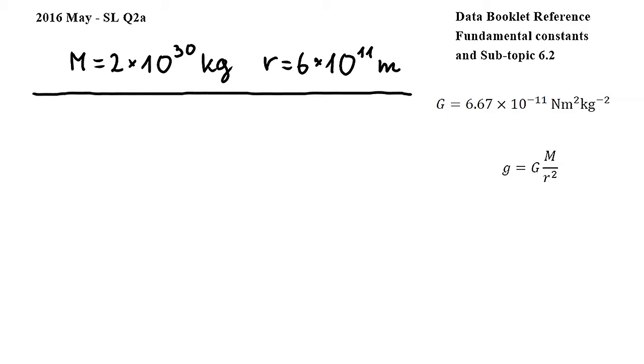In this question, we have to show that the gravitational field strength due to one of the stars is approximately 3.7 times 10 to the power of negative 4 newtons per kilogram.